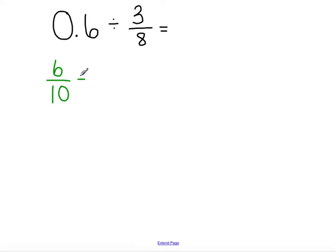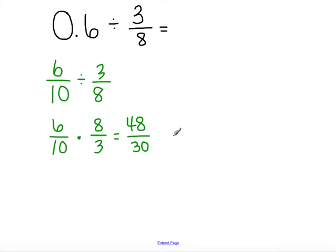So, this problem becomes 6 tenths divided by 3 eighths. And now, I can do my keep change flip. So, I have 6 tenths, I'm keeping that the same. I'm changing division to multiplication, and then I'm flipping my second fraction, so that it becomes 8 thirds. Now, I can just multiply across. 6 times 8 is 48. 10 times 3 is 30.